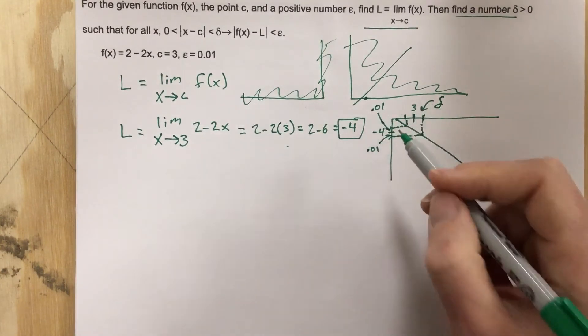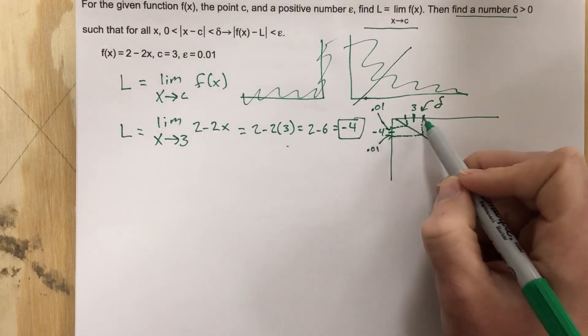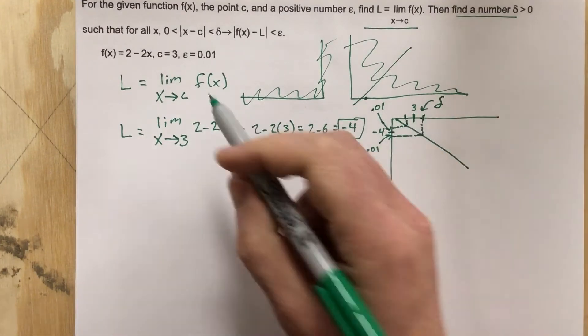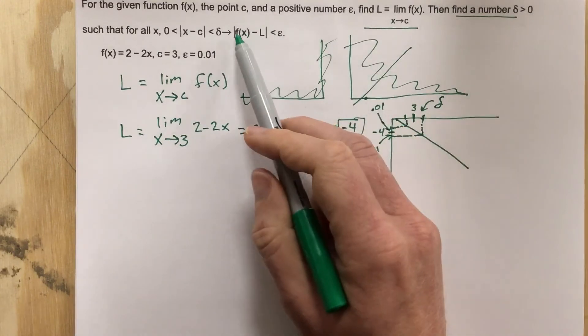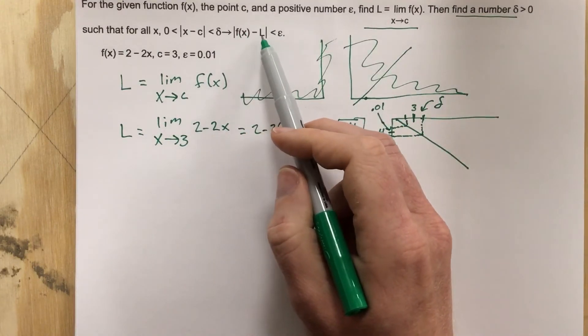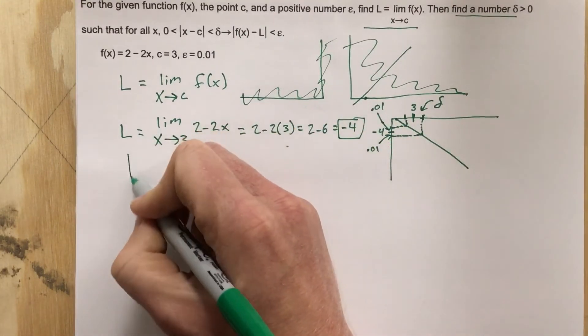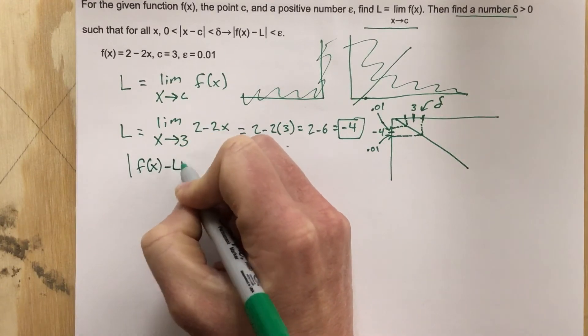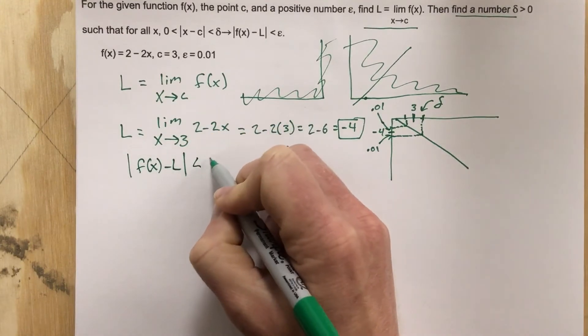All right, we want to know the delta value that will produce basically a tolerance that's within this epsilon value of 0.01. Well, how do we start this? Well, we're going to start with epsilon and work our way backwards to find these x values.